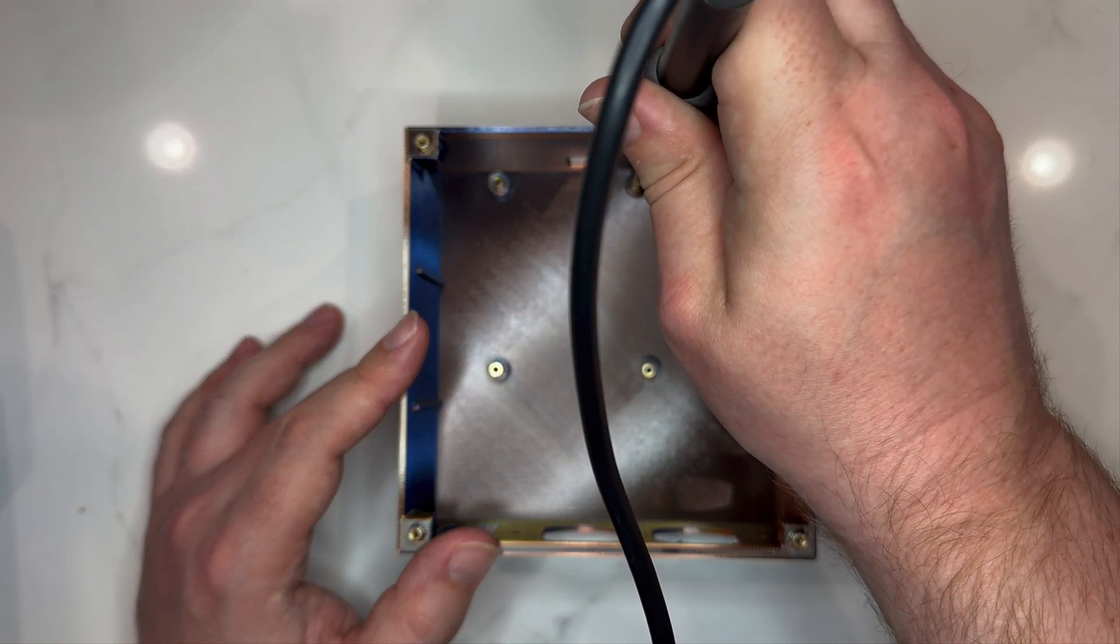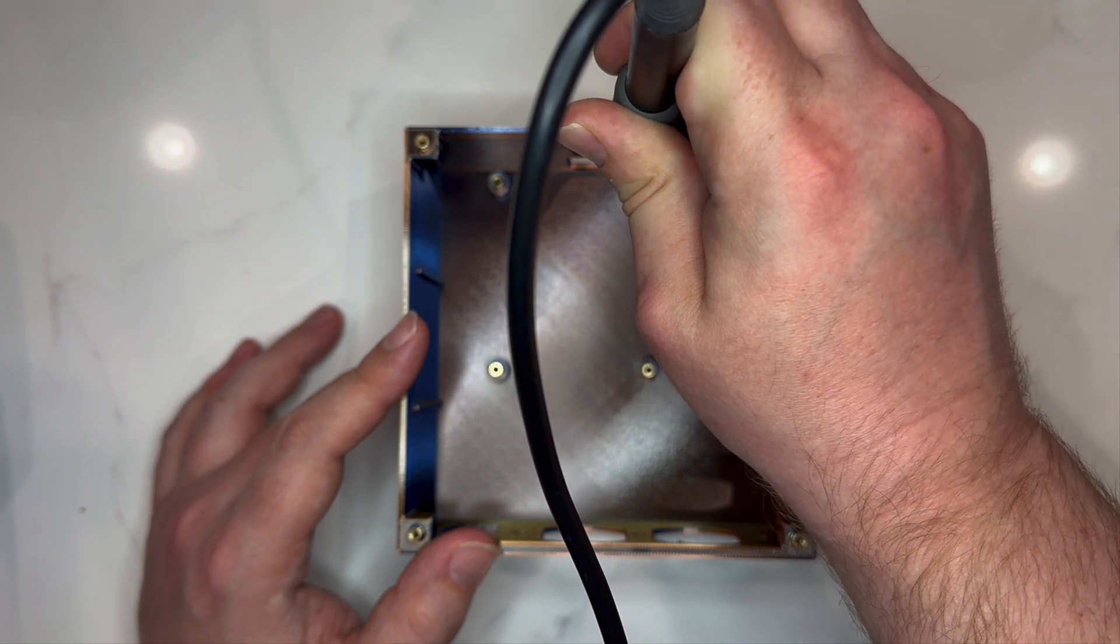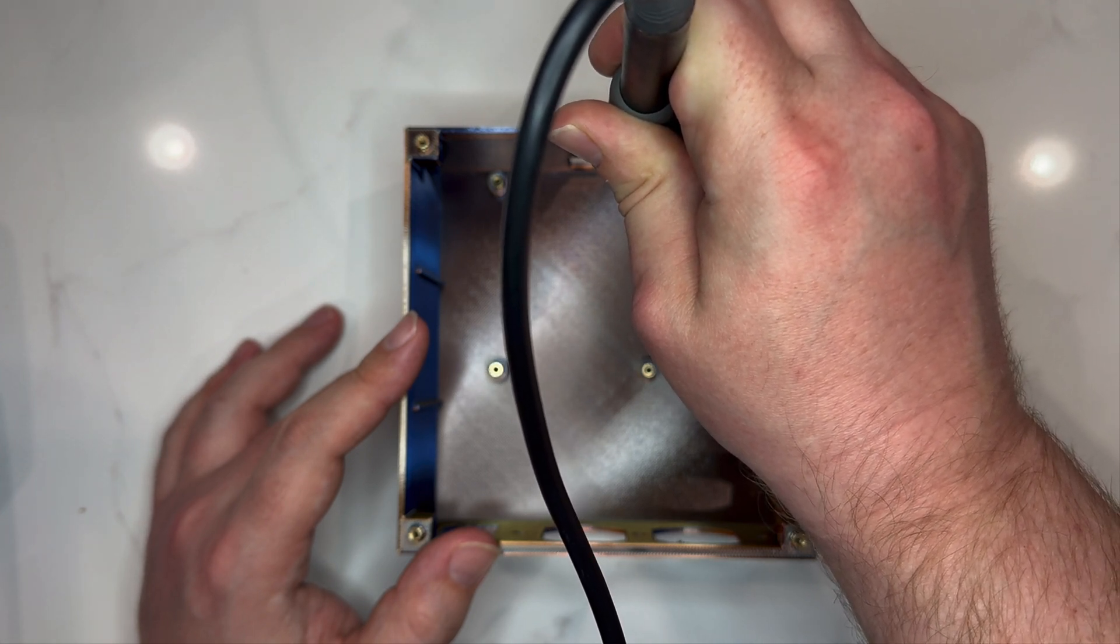Using the soldering iron, rest the tip on top of the heat set insert, allowing it to get hot and melt into the plastic. Stop when the insert is fully inserted into the plastic.